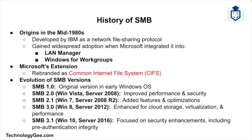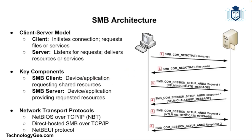SMB 2.0 was introduced with Windows Vista and Windows Server 2008, bringing significant improvements in performance and security. SMB 2.1 came with Windows 7 and Windows Server 2008, adding new features and optimizations. SMB 3.0 was launched with Windows 8 and Windows Server 2012, including enhancements for cloud storage, virtualization, and performance. SMB 3.1.1 was included in Windows 10 and Windows Server 2016, focusing on security enhancements such as pre-authentication integrity.